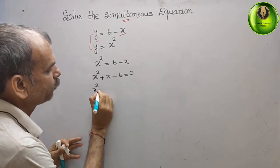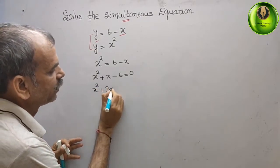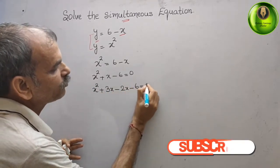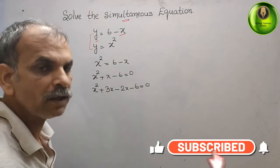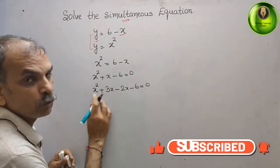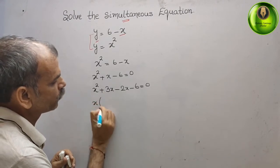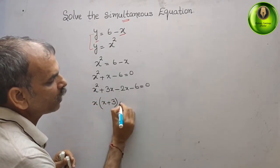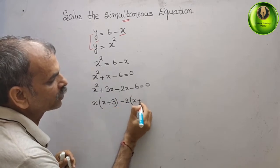Normal factorization. In this 2x is common, we will get x + 3. In this 2, minus 2 is common, we will get x + 3 that gives you 0.